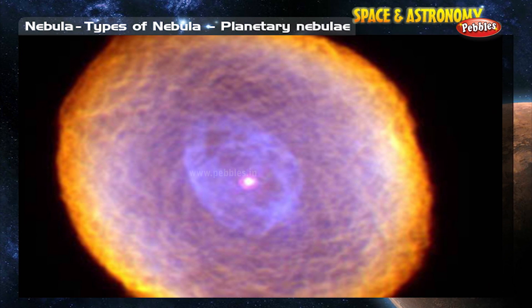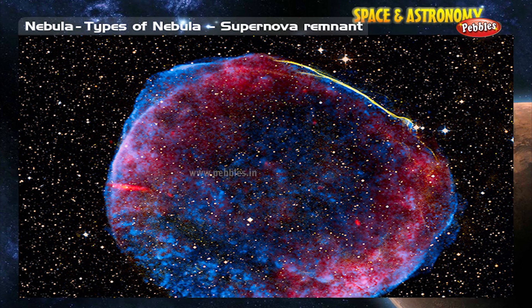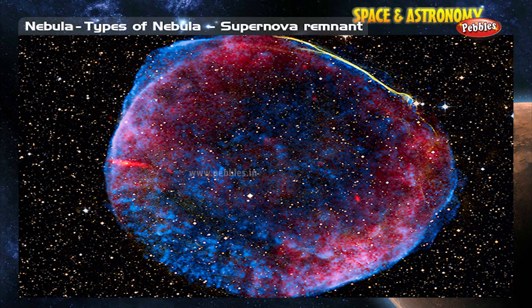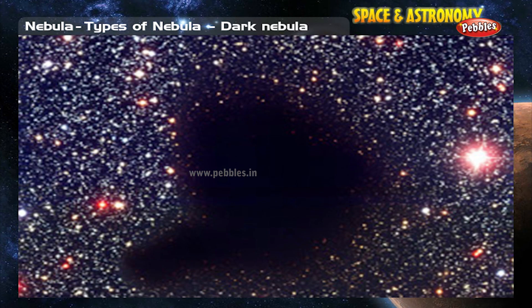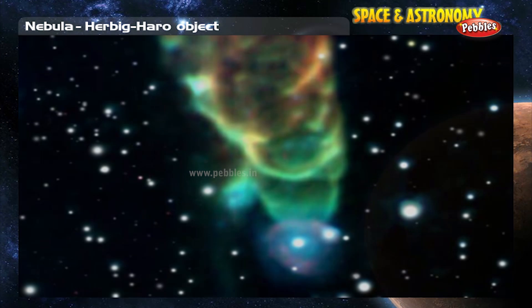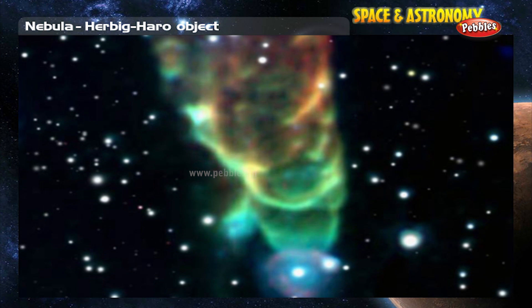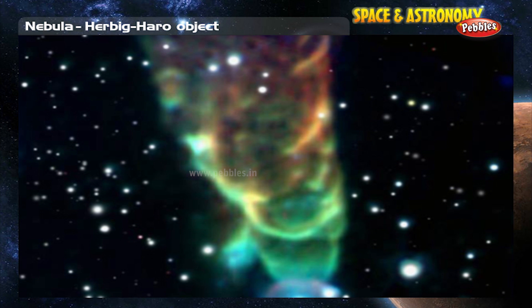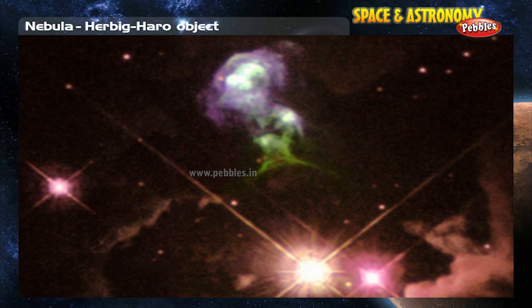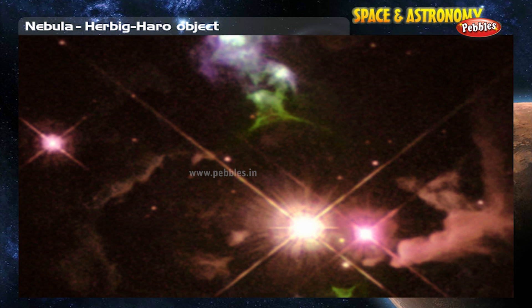Second, planetary nebulae. Third, supernova remnants. Fourth, dark nebulae. This classification does not encompass all known cloud-like structures. An example is a Herbig-Haro object.